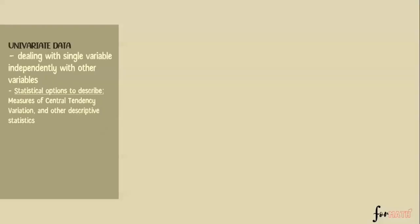First, let's define univariate data. Univariate data deals with a single variable — the attribute of interest. For example, if your data is all about length, length only. If height, height only. If weight, weight only. So that's a single variable independently.